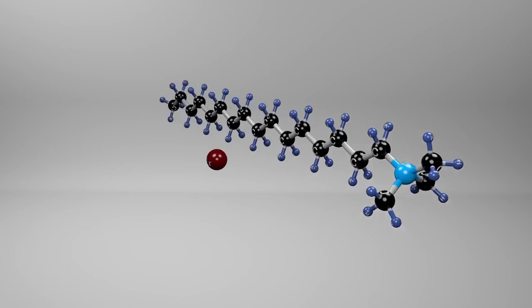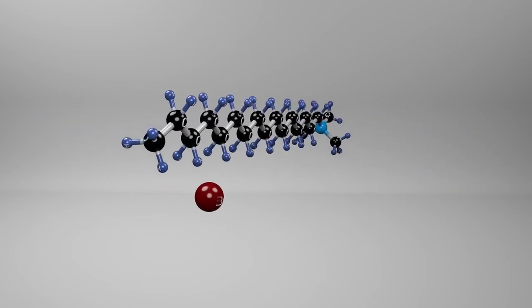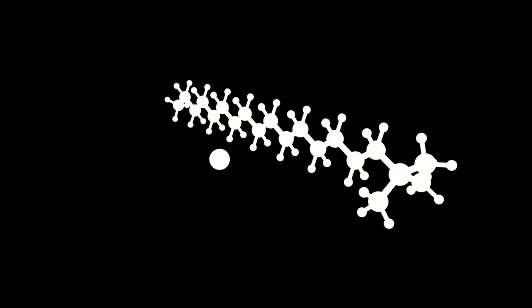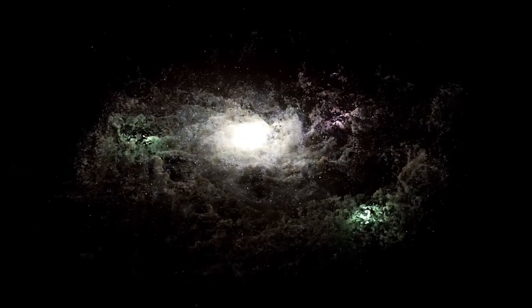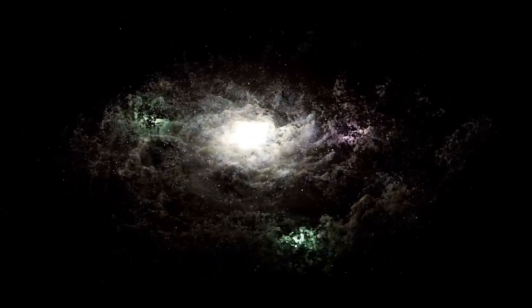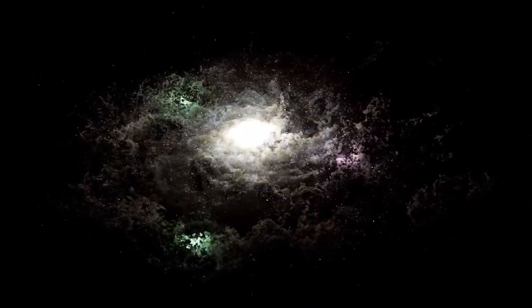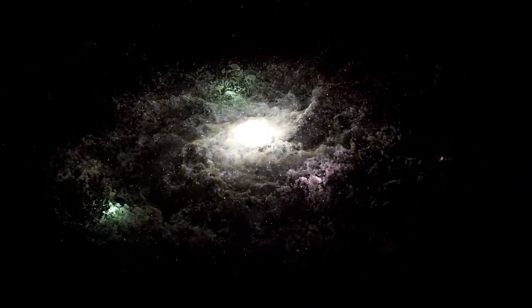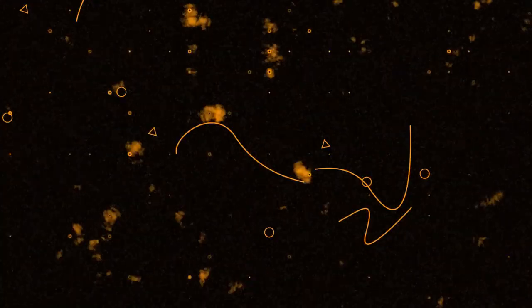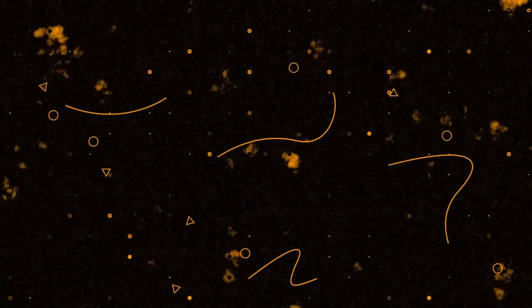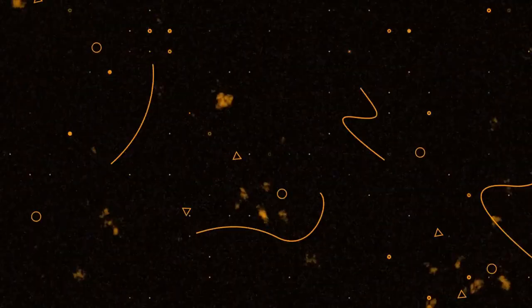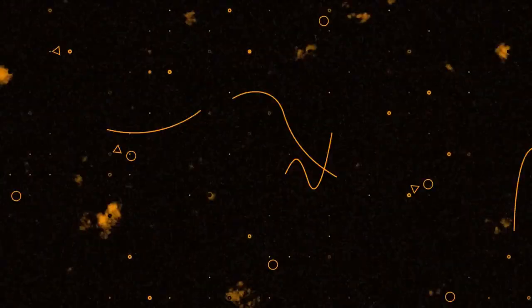Binding the universe together are cosmic filaments, enormous threads of gas, dust, and dark matter that stretch across billions of light-years. These filaments form a web-like structure that links galaxies and clusters into an intricate cosmic network. The universe's matter is not evenly distributed. Instead, it forms this delicate web of filaments and nodes, where gravity gathers galaxies together.